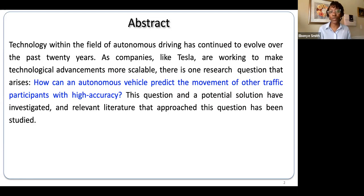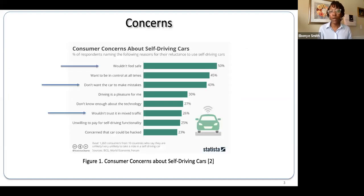How can an autonomous vehicle predict the movement of other traffic participants with high accuracy? While studying the opinions of consumers, three main concerns arise: they wouldn't feel safe, they don't want the car to make mistakes, and they wouldn't trust the autonomous vehicle in mixed traffic.